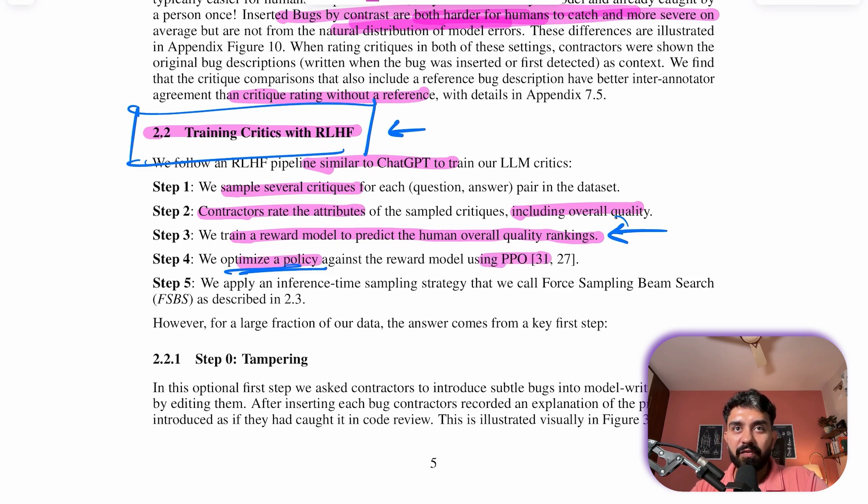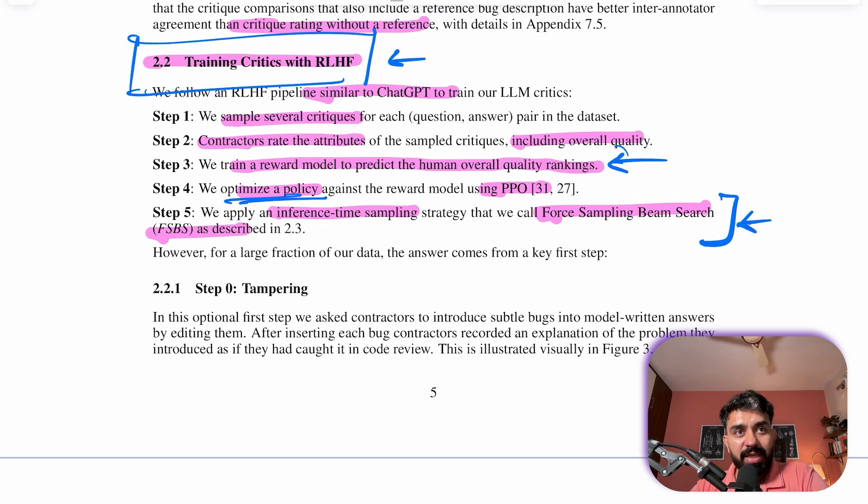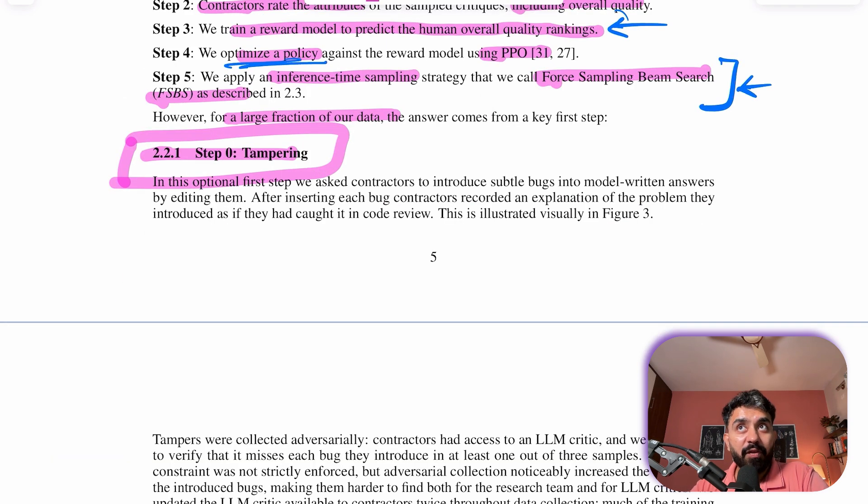A reward model is trained to predict these quality rankings and a policy is optimized against this model using PPO. Now finally, an inference time sampling strategy which is called your FSBS or Force Sampling Beam Search is applied.